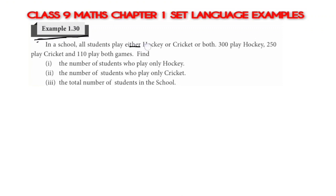In a school, all students play either hockey or cricket or both. 300 play hockey, 250 play cricket, 110 play both games. Submission 1: number of students who play only hockey. Submission 2: number of students who play only cricket. Submission 3: total number of students in the school.